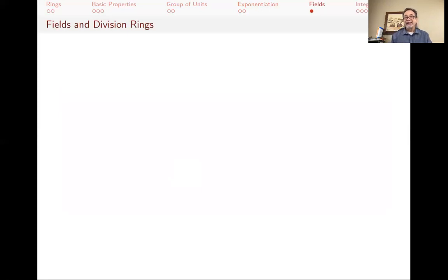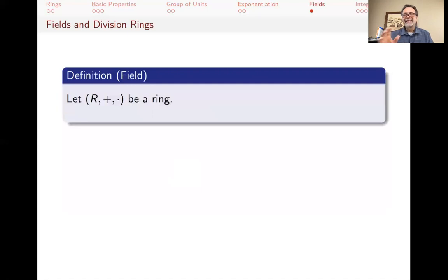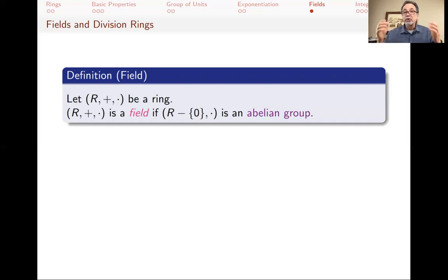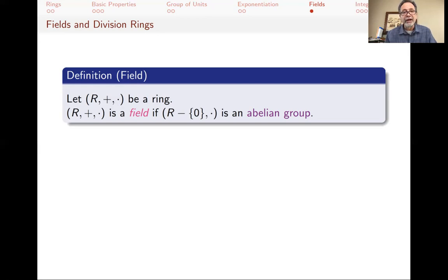The nicest kind of ring is one where, when you throw away zero, the remaining elements form a group under multiplication. Zero can never have an inverse, so the best we can hope for is that D minus zero forms a group. If that group is abelian, we call it a field. A field is a ring where you can do all four arithmetic operations — addition, subtraction, multiplication, and division by non-zero elements. If D minus zero forms a group but not necessarily abelian, we call it a division ring.